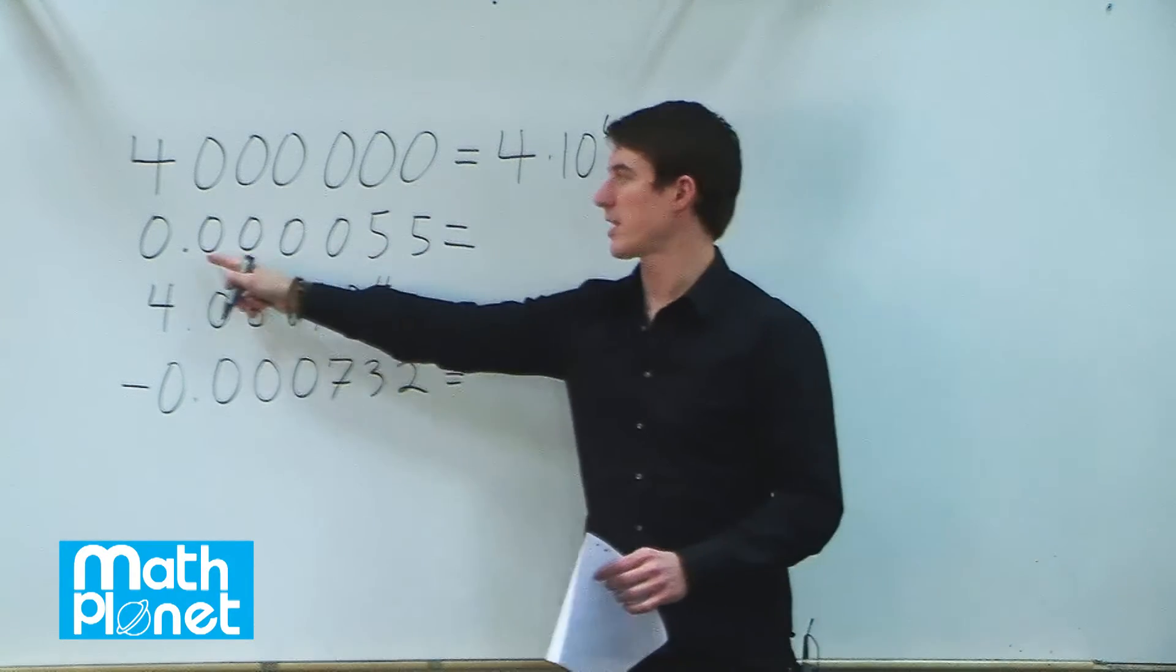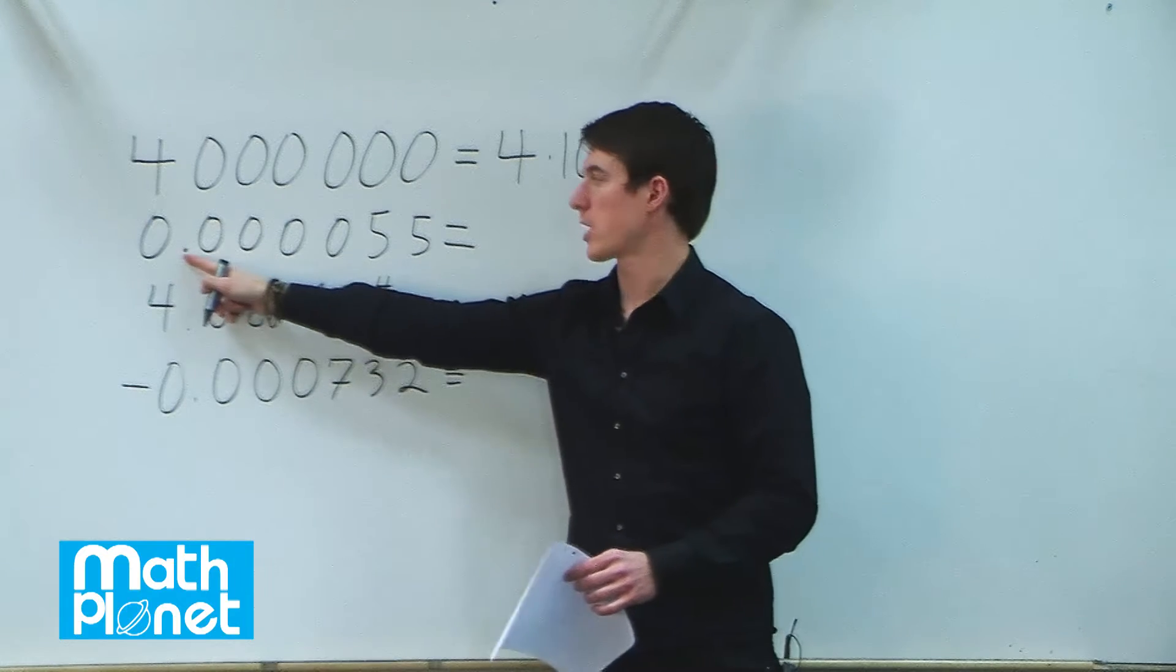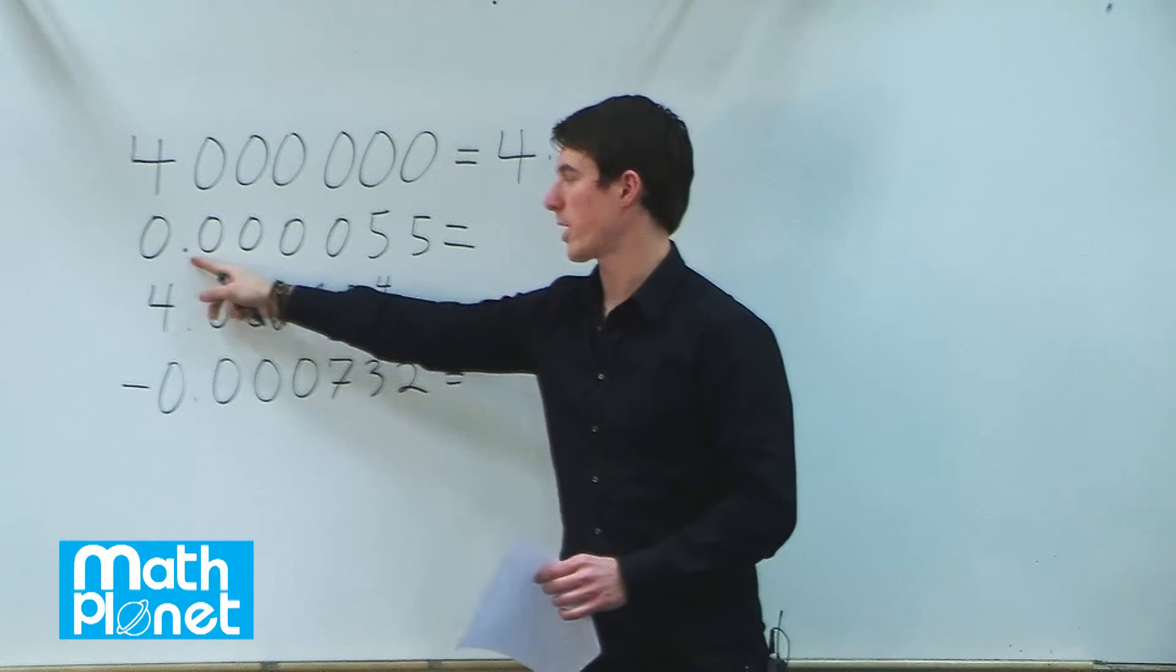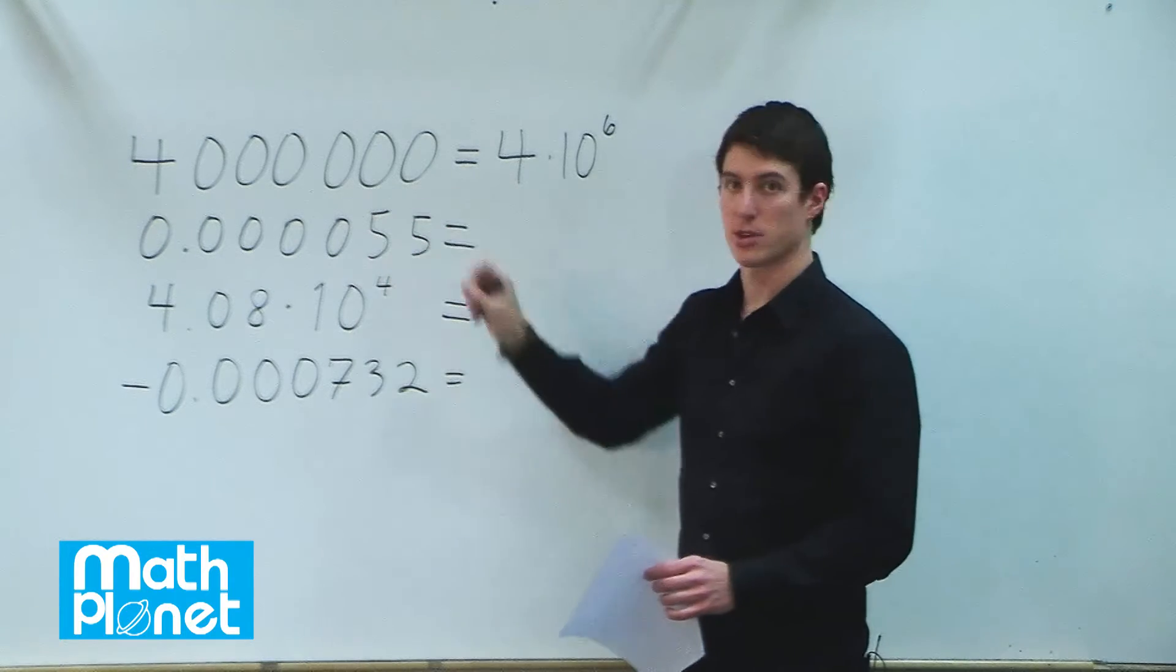This is the same idea, but now the decimal place is to the left, so we're going to talk about negative powers. We want to see how many places we have to move the decimal to get to the first significant digit.